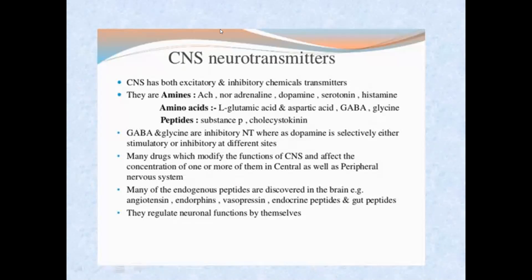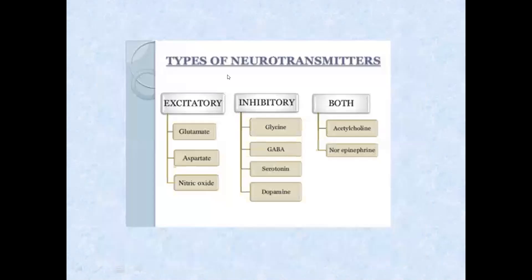In the CNS, two types of neurotransmitters are present: one is inhibitory and another one is excitatory. In the classification, you will get an idea regarding this. Excitatory neurotransmitters include glutamate, aspartate, and nitric oxide.